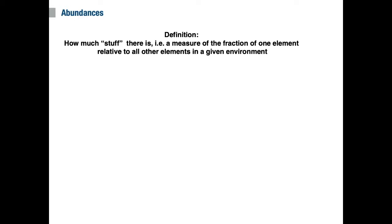As a first step, we must understand the abundance data itself. So let's start with some definitions. What do we mean by the term abundances? Simply put, the abundance of an element is a measure of how frequently it occurs in a given environment.